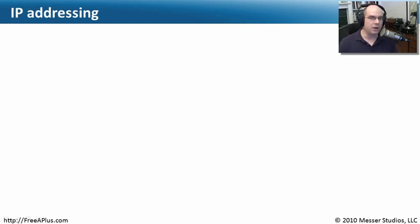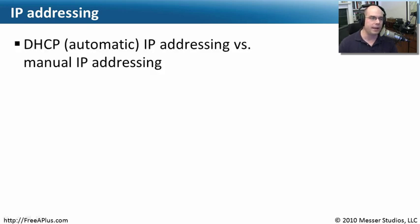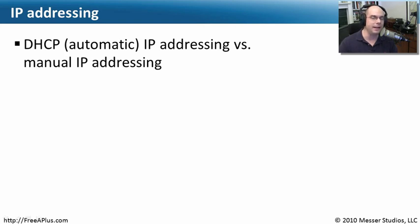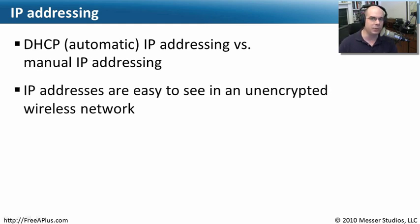Most access points can also be configured to assign IP addresses automatically, so you don't have to configure each wireless workstation with a specific IP address. You can tell your wireless access point to hand out IP addresses automatically through something called DHCP. Some people choose not to use DHCP and manually assign IP addresses, sometimes on very obscure ranges, hoping that if someone showed up and didn't know your IP addressing scheme, they would not be able to get on your wireless network.